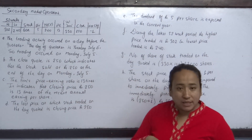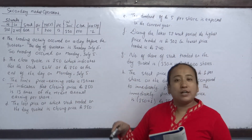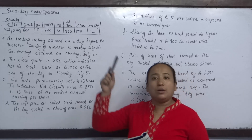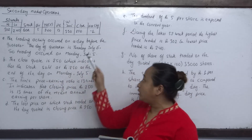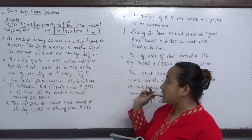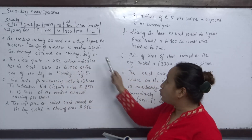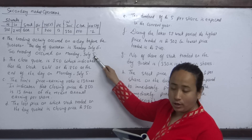Today the trading activity was recorded. So it is Monday July 5, published in the July 6 newspaper.